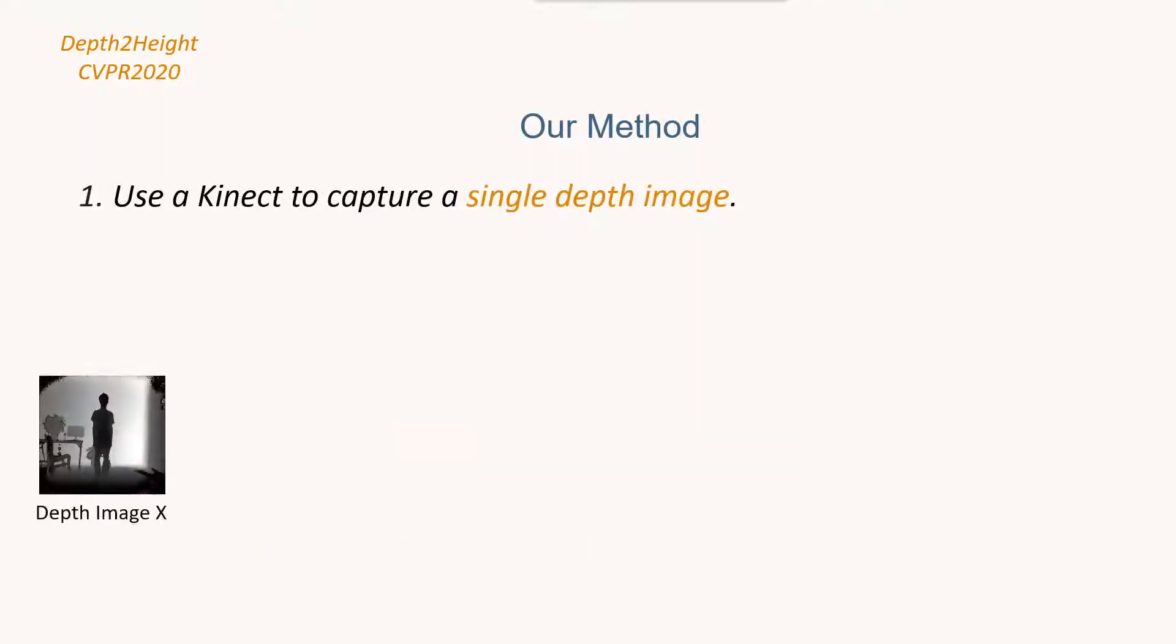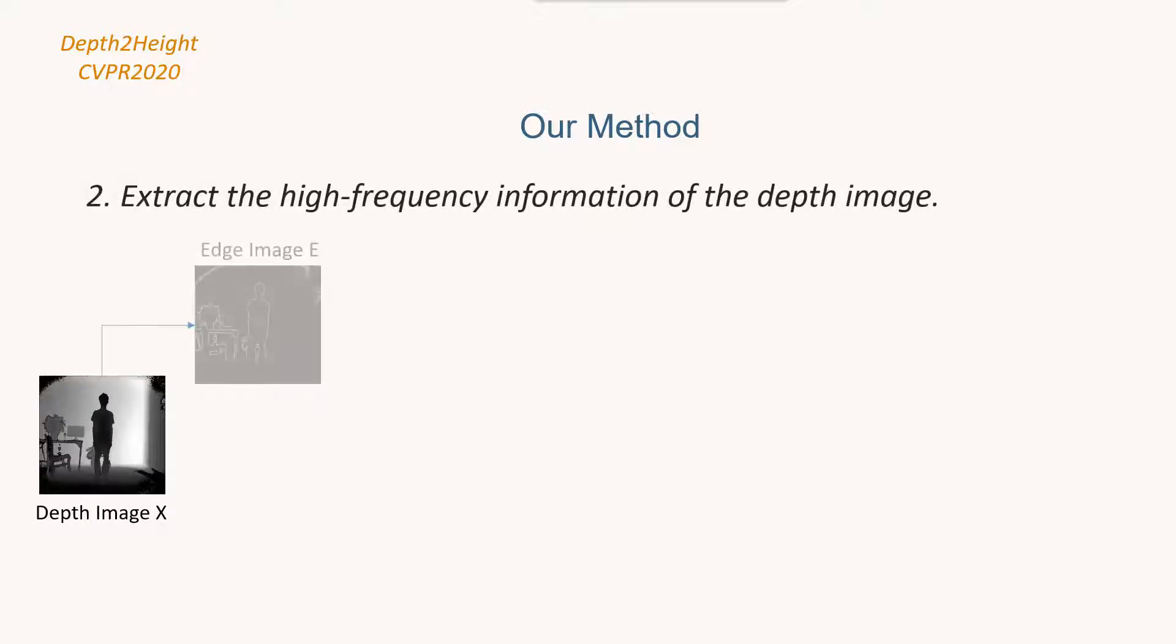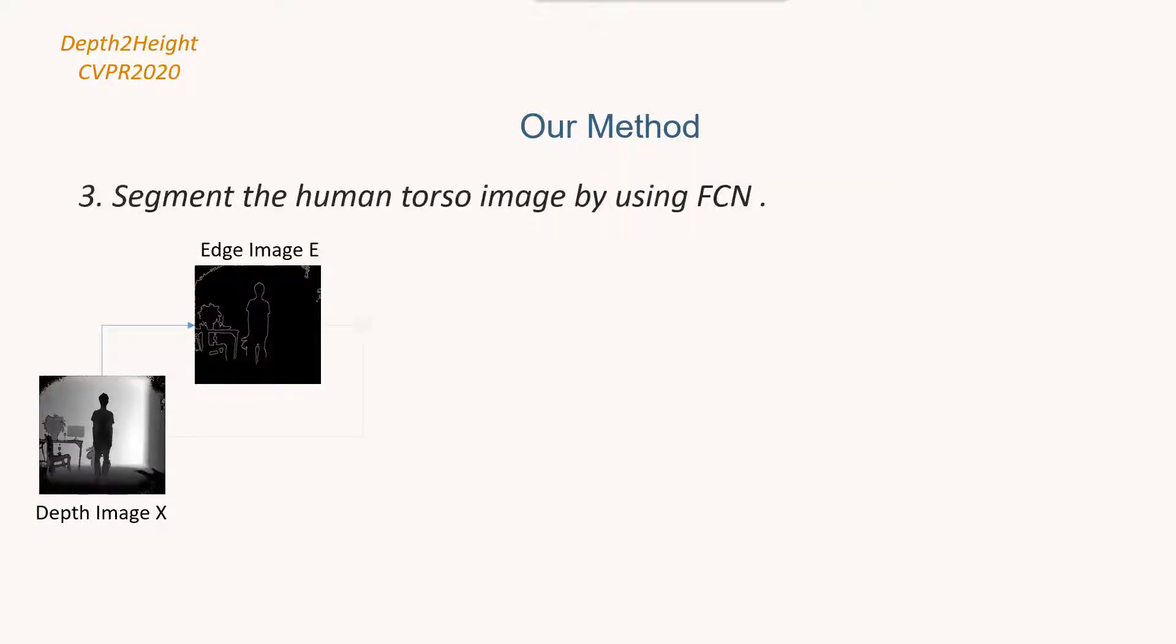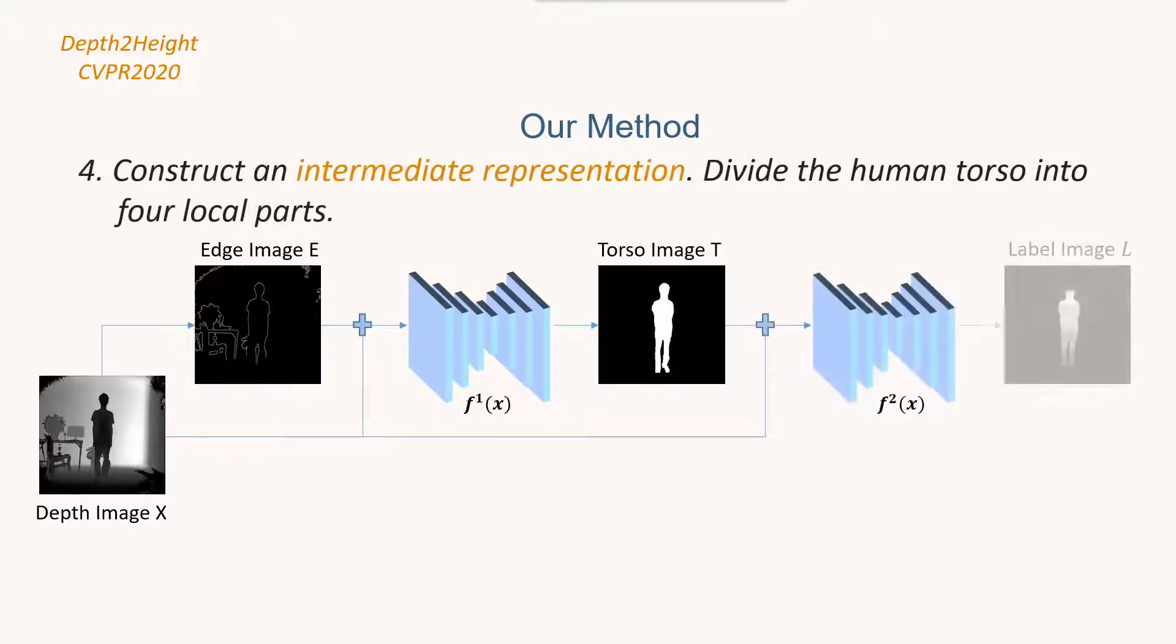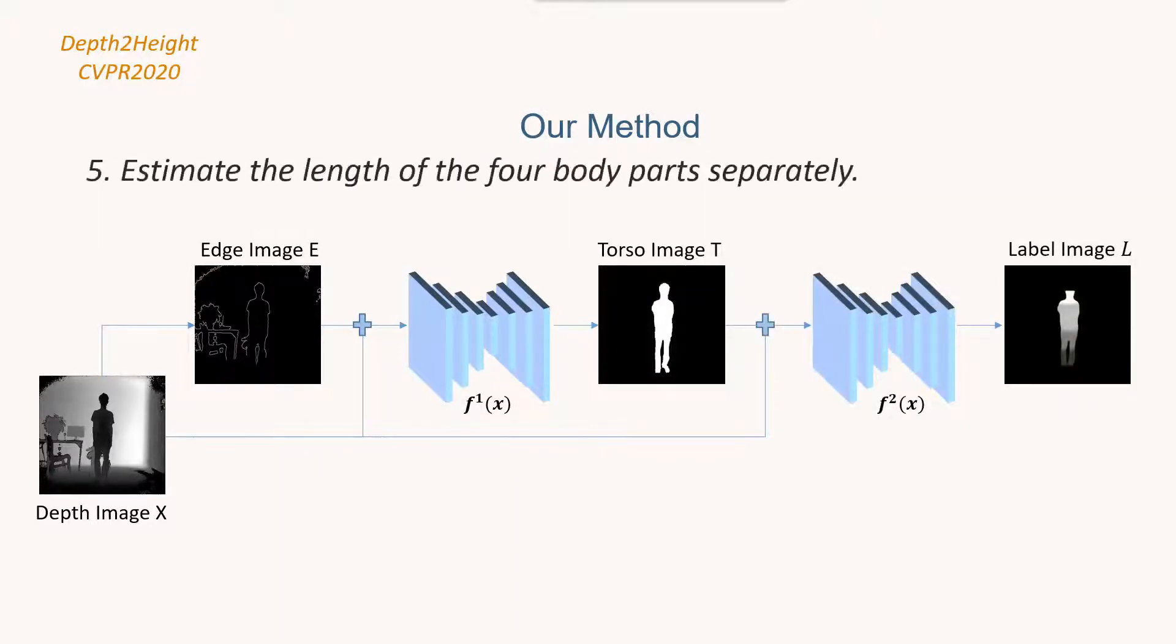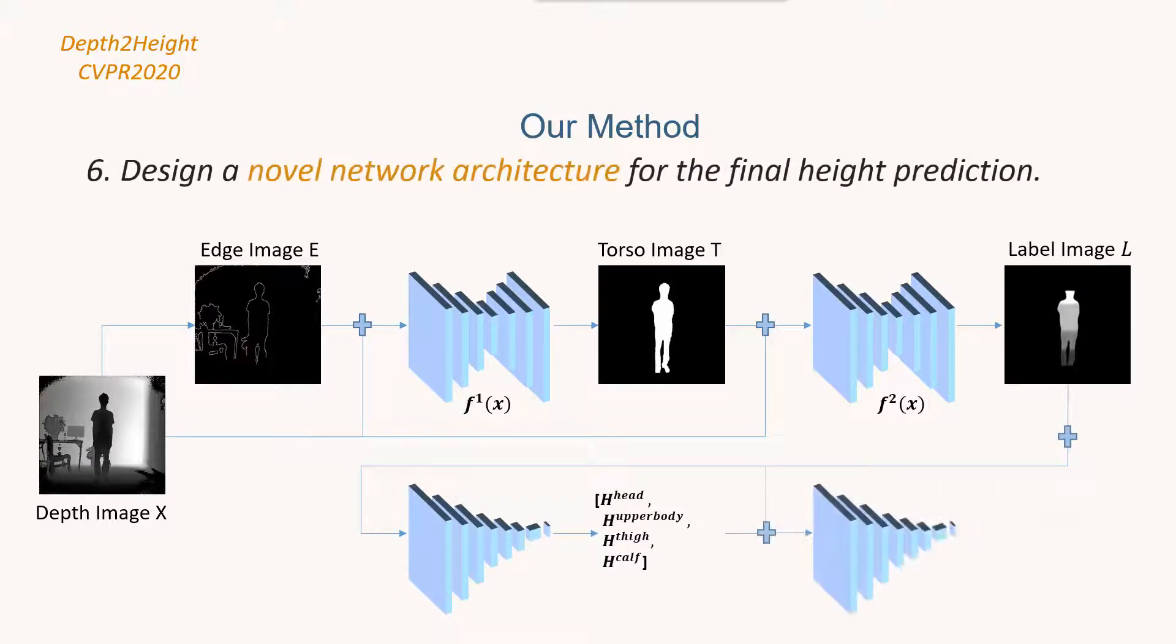We first describe the human body in the form of a segmentation of human torso as four nearly rigid parts and then predict their lengths respectively by three CNNs. We construct an independent developing CNN that combines the intermediate representation and depth information together to finally predict the body height.